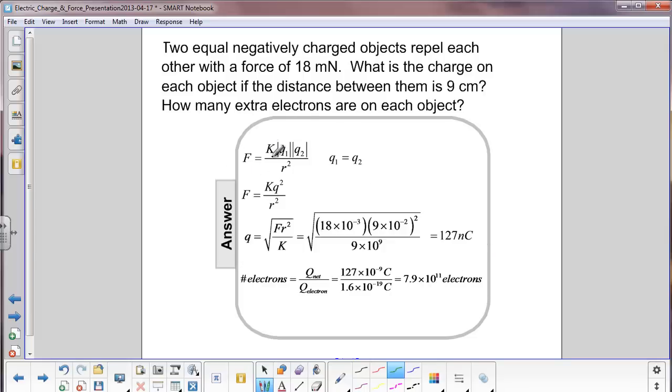We start here with Coulomb's Law: F equals k, absolute value of q1, absolute value of q2, divided by r squared. We know the two objects are equal, and they're negative. So we make this statement here: q1 equals q2.